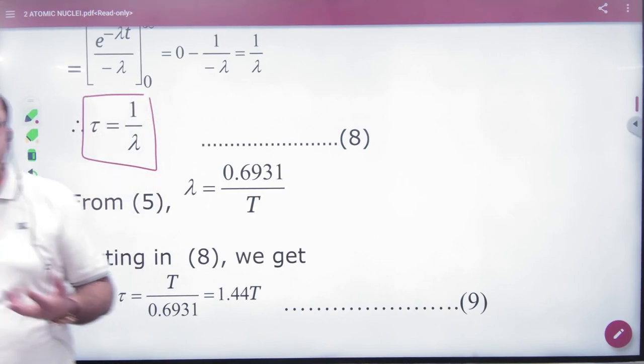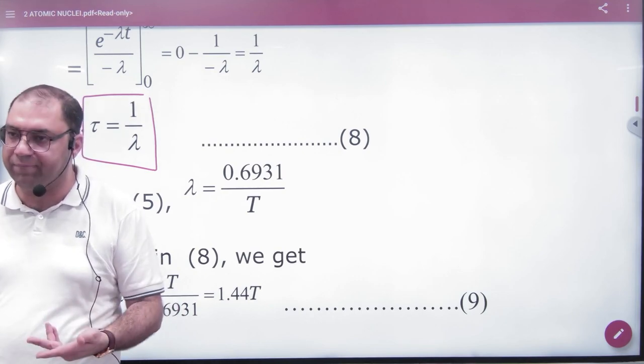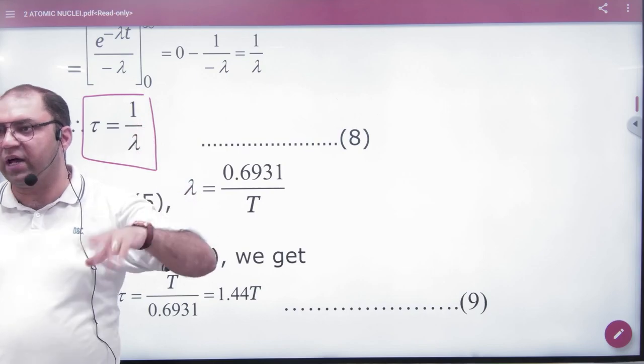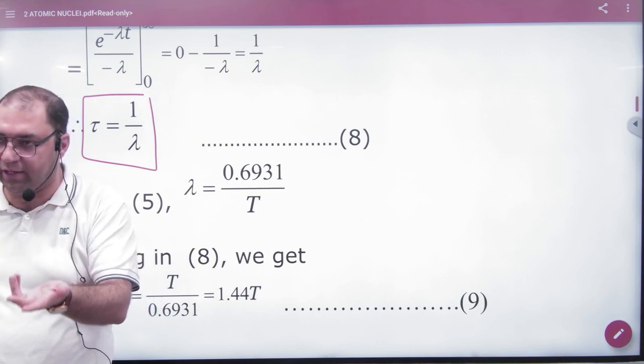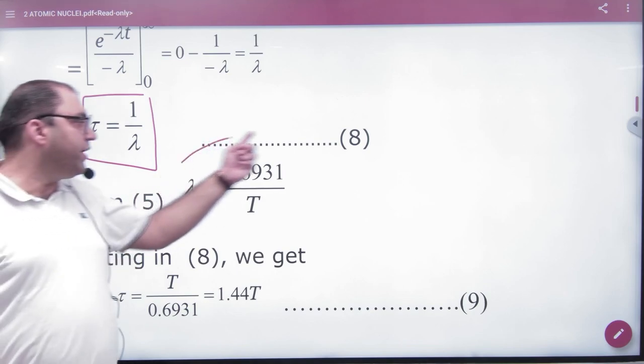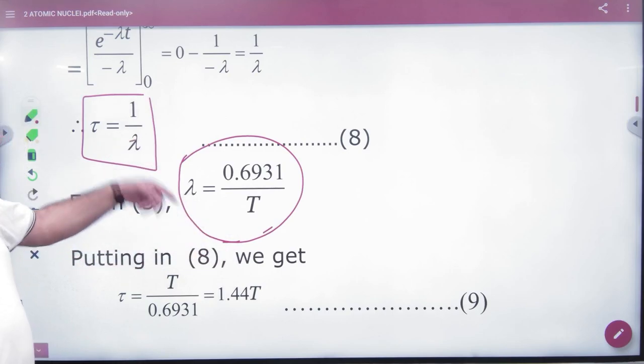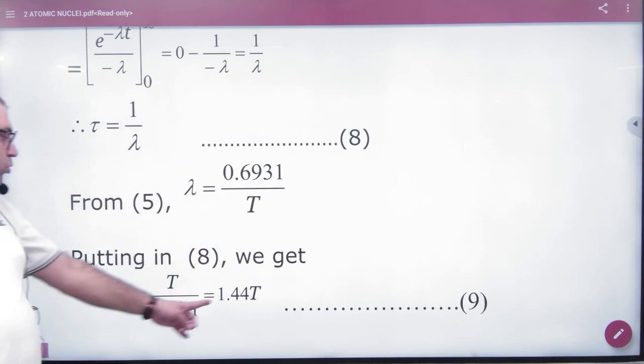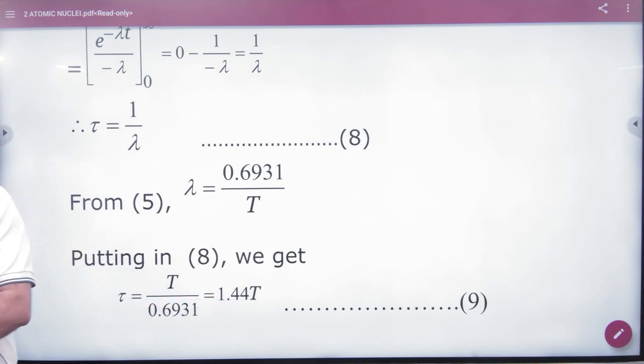Now because it will depend on the nature of atoms, it will depend on which lambda is more, it will fall quickly. Its age is less. If the lambda is less, it will fall too late. Its time will fall too. So its age will be more.